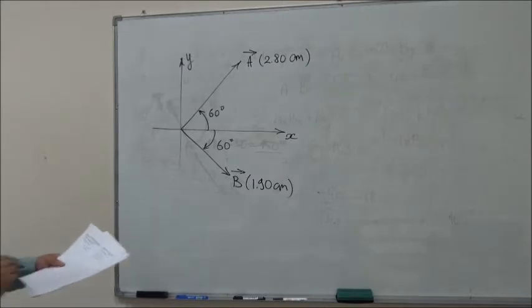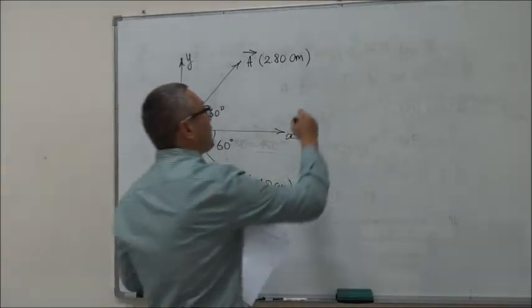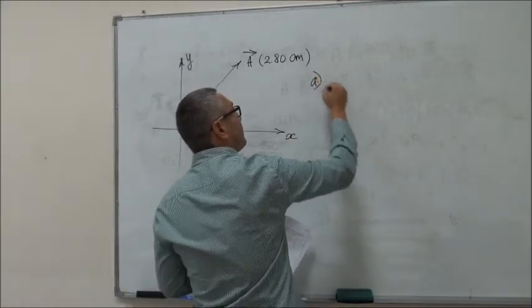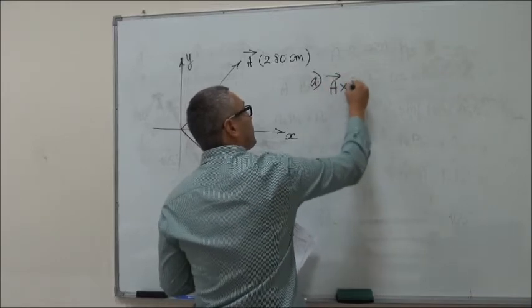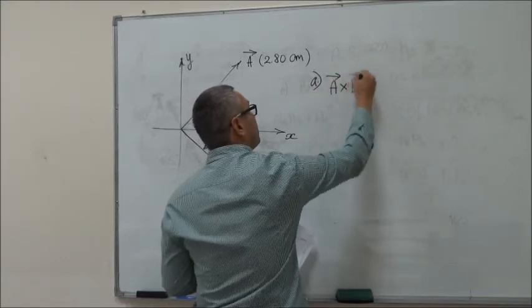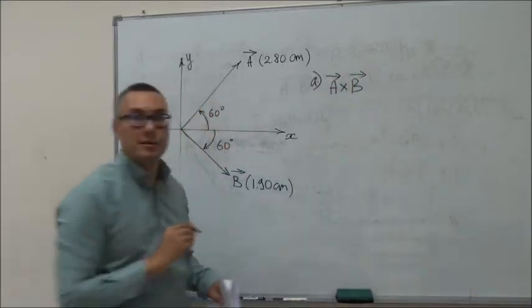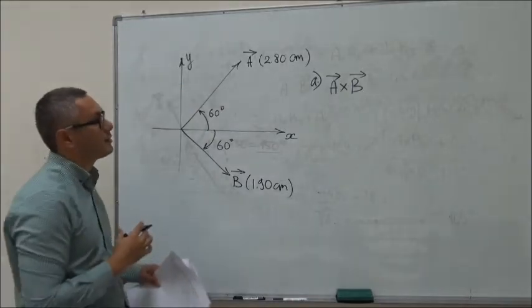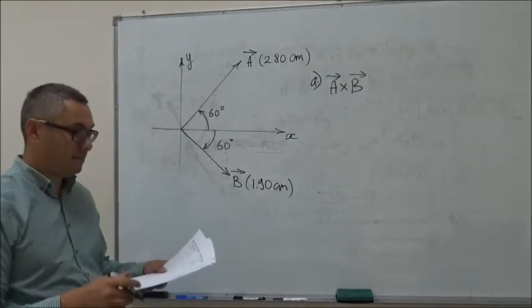The question is, in part A, what is the cross product of the two vectors — cross, or sometimes called vector product — of A cross B?